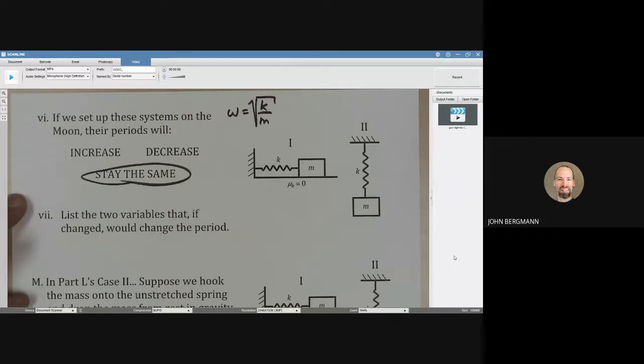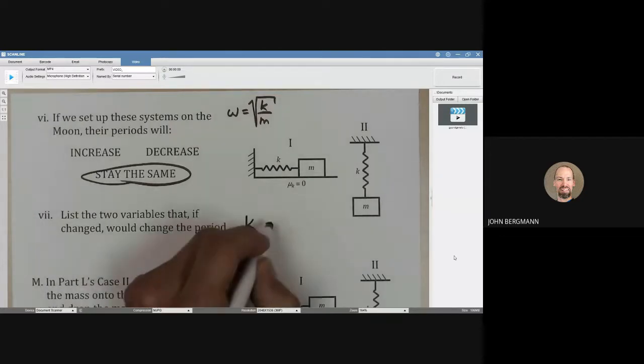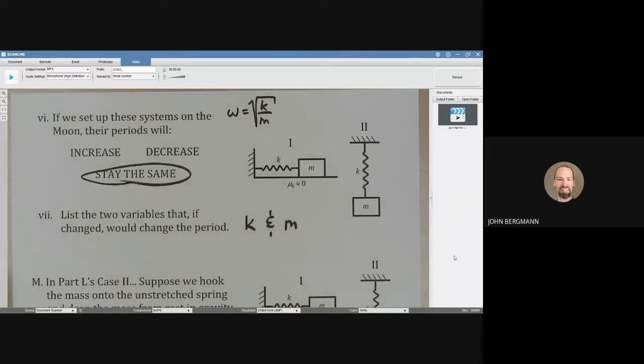What about the two variables that, if changed, would change the period? Well, obviously that is K and M. That will definitely change the period.